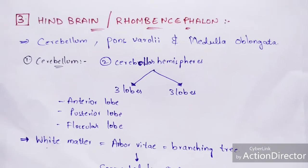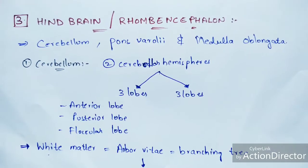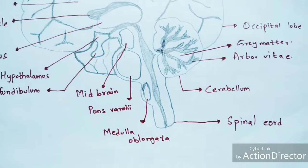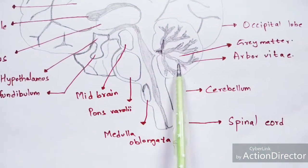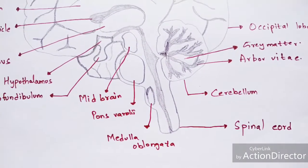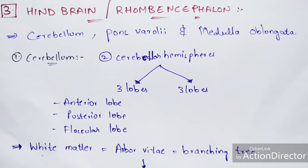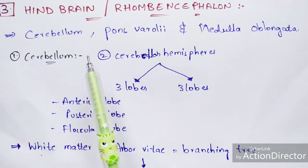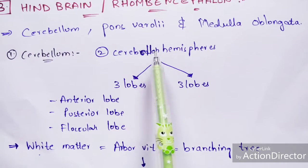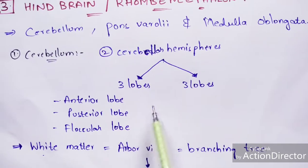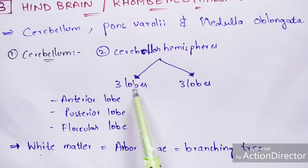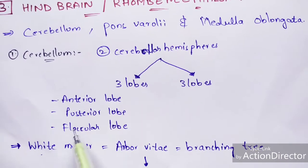The hindbrain is also called the rhombencephalon. It consists of three parts: cerebellum, pons Varolii, and medulla oblongata. The cerebellum is divided into two cerebellar hemispheres, and each cerebellar hemisphere consists of three lobes: the anterior lobe, the posterior lobe, and the floccular lobe.